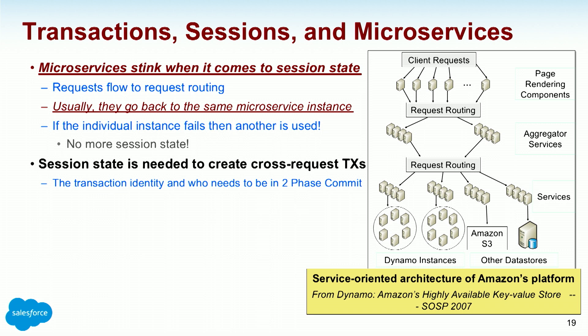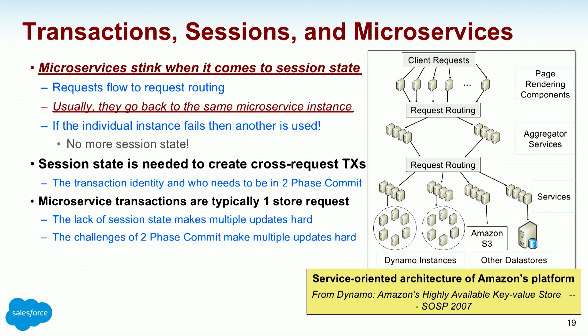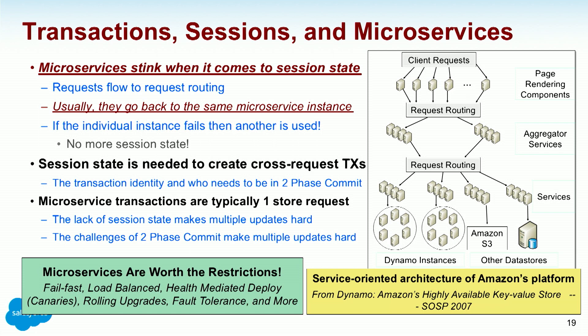Microservices and transactions are typically one store request. You get to the microservice, update the key-value store — great. But you don't end up with two-phase commit because it's really hard to make it work. Microservices are worth the restrictions: fail fast, load balanced, health-mediated deploy, canaries, rolling upgrades, fault tolerance. But now we've pushed microservices back into careful replacement of the key-value store — update value one, scratch your head, update value two — and the programmer has to reason about failure modes between them. It's trade-offs we need to understand.